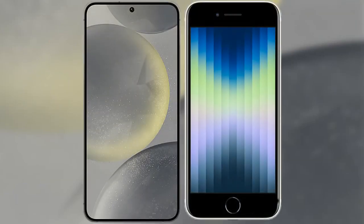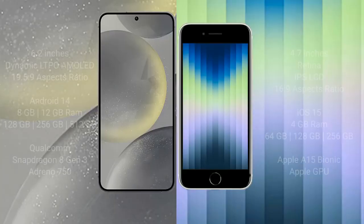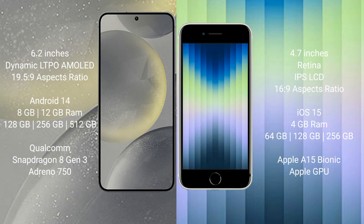I will compare the new Samsung Galaxy S24 with the iPhone SE. The Samsung Galaxy S24 comes with a 6.2-inch Dynamic LTPO AMOLED display and an aspect ratio of 19.5:9. The iPhone SE comes with a 4.7-inch Retina IPS LCD display and an aspect ratio of 16:9.